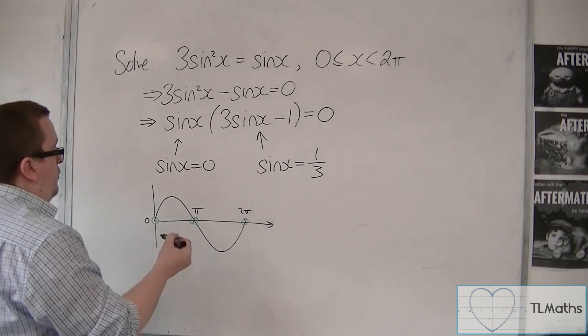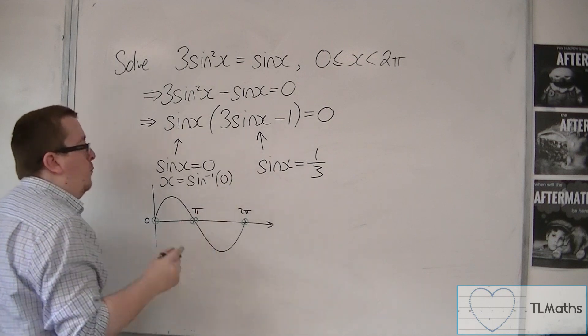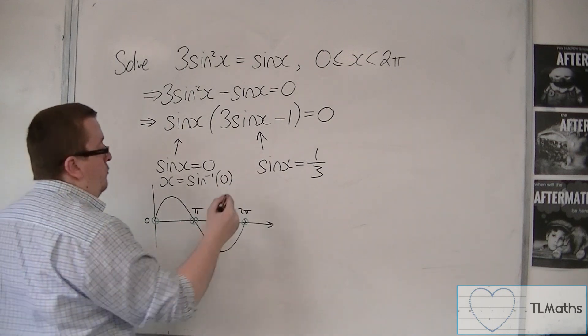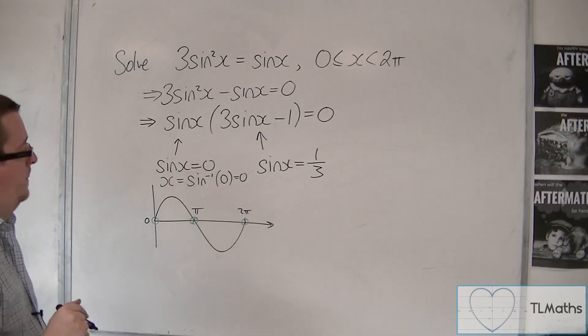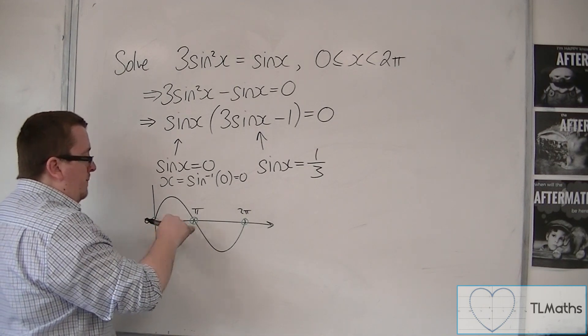So, usually, of course, we would have done x equals inverse sine of 0, and what you should find is that it's just 0. So it's that point there. So we now have two solutions. We've got 0 and pi.